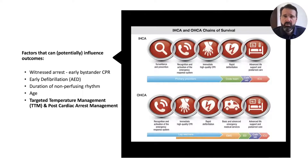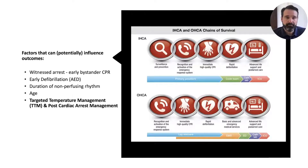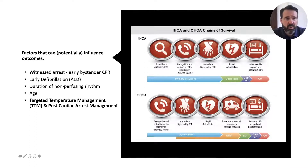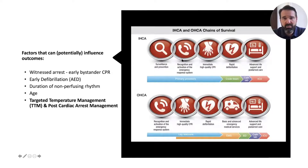As we look across the chain of survival for these patients, there are factors that we can influence as organizations and healthcare providers that can potentially provide better outcomes. Control our controllables. Witnessed cardiac arrest with early bystander CPR is certainly one aspect of a better outcome. Early defibrillation, looking at in-hospital cardiac arrest and out-of-hospital cardiac arrest, is certainly a key factor.